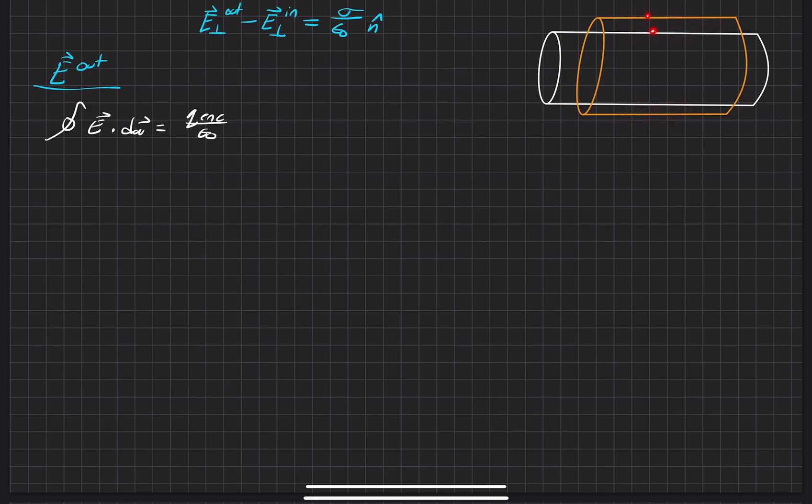so that the normal vector points in the same normal vector as this one. And the whole point is to make this dot product go into a multiplication, but again, that's the chapter for Gauss's Law that we've done a while ago.